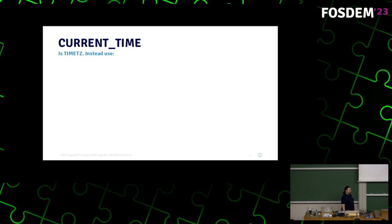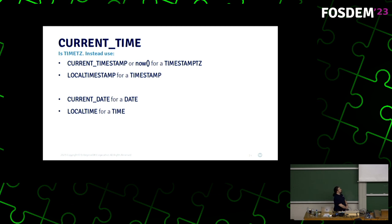Current underscore time is another favorite. Current time is timestamp tz. So we just said don't use timestamp tz. Instead use current timestamp or the function now to get the current time with the time zone and local timestamp that returns a timestamp if you just want to know what time it is here in your local time zone. Equally, you can use current date for a date and local time for the local time. These are not timestamps. These are dates and times, right?